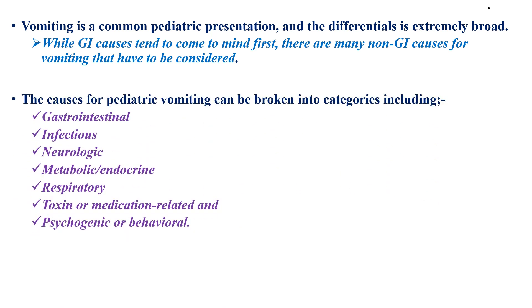The causes of pediatric vomiting can be broken into categories including gastrointestinal causes, infectious, neurologic causes, metabolic, endocrine causes, respiratory, toxin or medication-related, and psychogenic or behavioral causes.